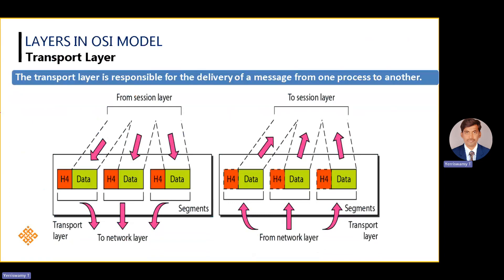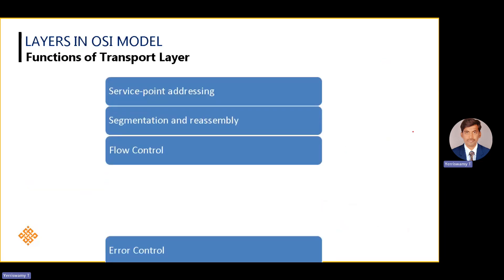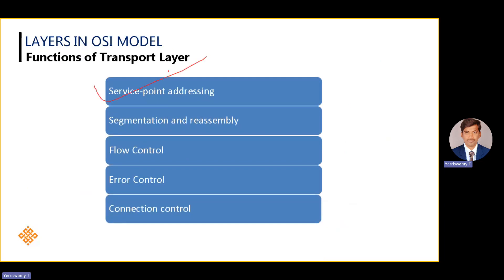The transport layer is responsible for process-to-process communication. It receives data from the session layer and performs the first division of data into segments. Each segment goes to the network layer for further processing, and the reverse happens at the receiver side. The main functionalities of the transport layer are: service port addressing (port communication), segmentation and reassembly, minor flow and error control, and connection control.